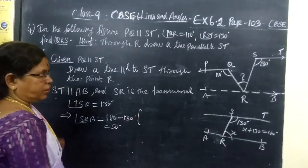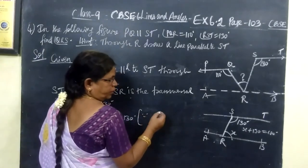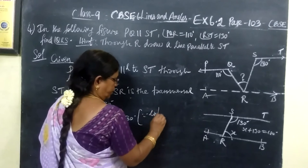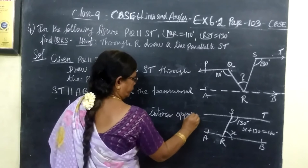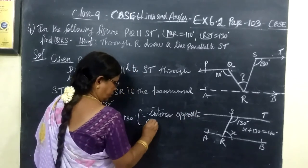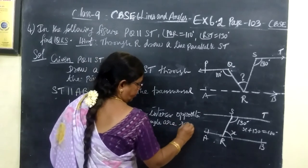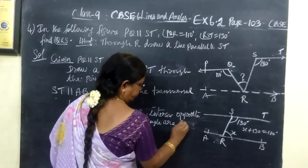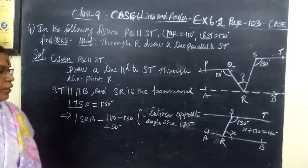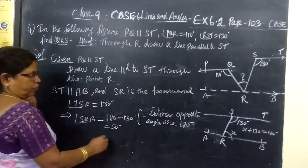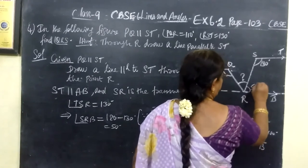What is the reason? Co-interior angles are supplementary — that is, the sum of the interior opposite angles is equal to 180 degrees. So this part is done: we have found angle SRB equals 50 degrees.